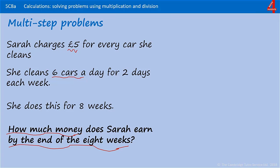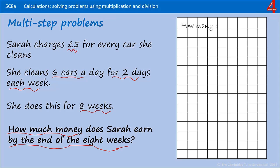We're going to start with how many cars does she clean each week. She cleans six cars a day and she does that for two days a week, so we're going to multiply six by two. Every week Sarah cleans 12 cars.